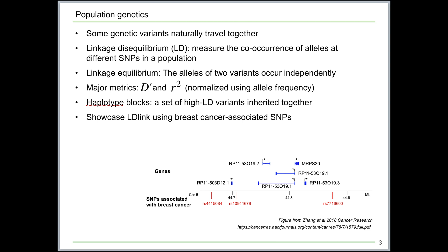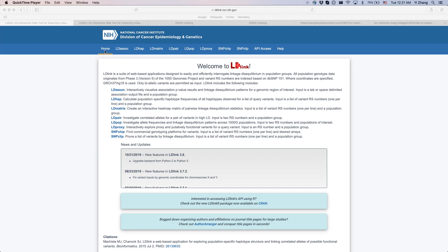I will focus on a small cluster of breast cancer-related SNPs around the gene called MRPN30, where three breast cancer-related SNPs have been reported before. Then I will showcase the interactive visualization of all GWAS SNPs when you have your own set of GWAS results. This is the main page of LDLink and there are many functionalities available. To help you understand more about LD and haplotype structure, I will first utilize the three breast cancer SNPs to dive into the functionality of LD-HAP, LD-PAIR, and LD-POP.